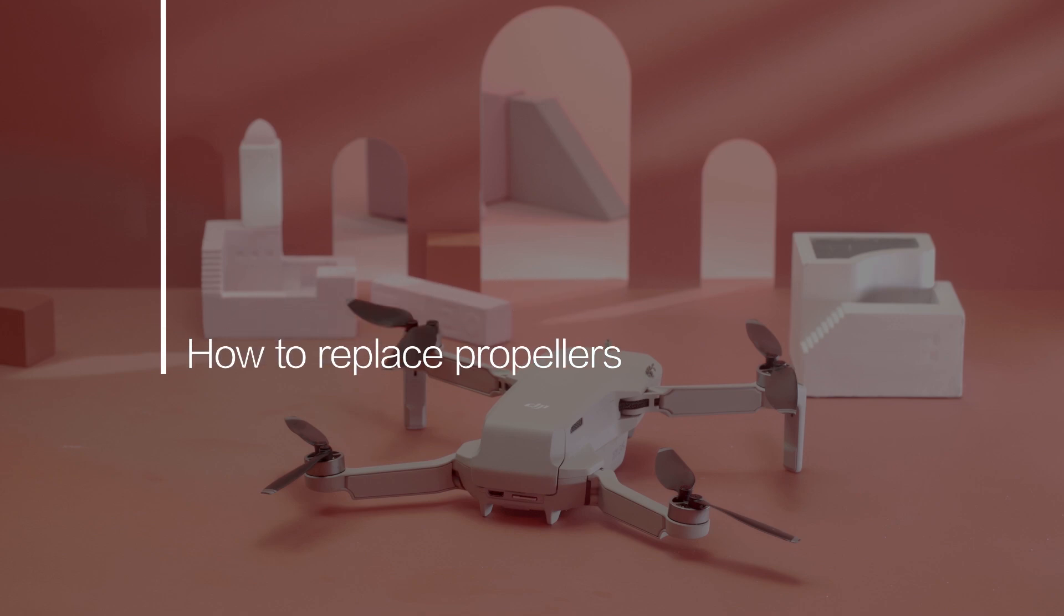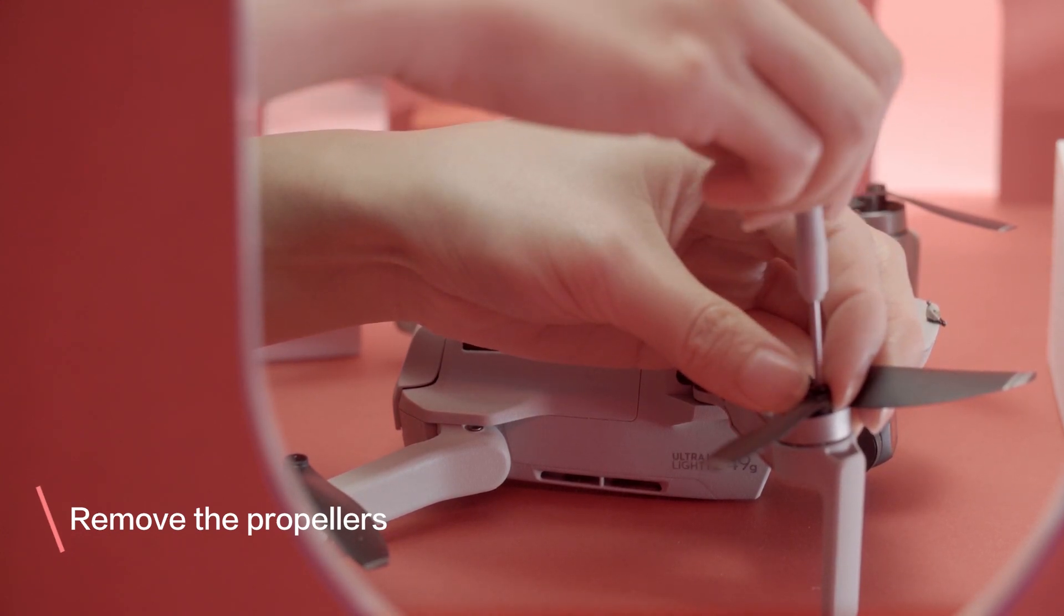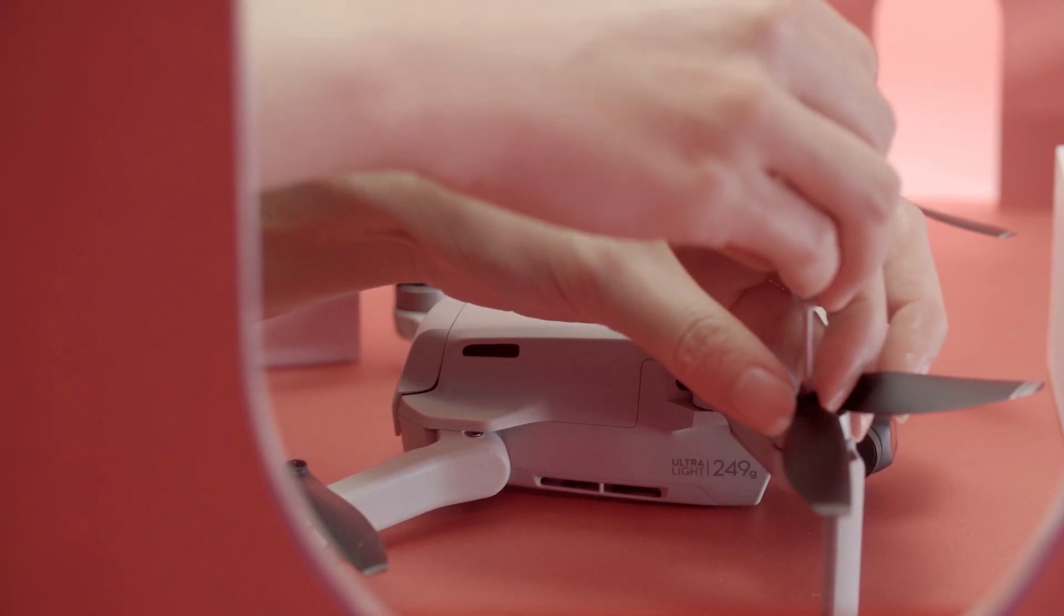How to Replace Propellers. Place the screwdriver on the screw's cross recess and rotate it counterclockwise to unscrew.